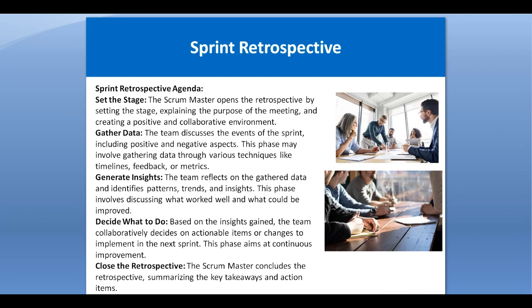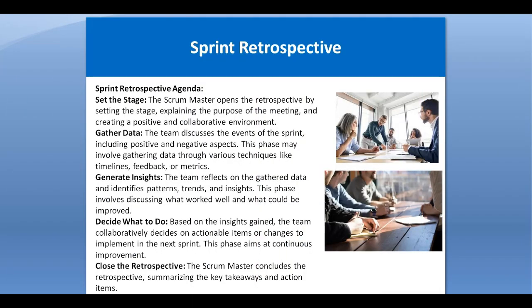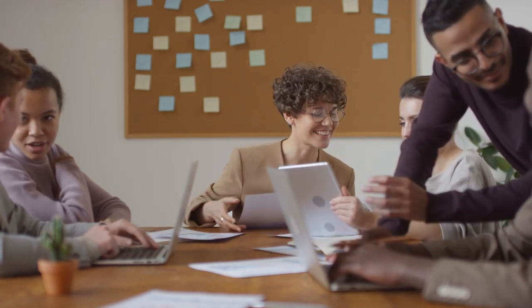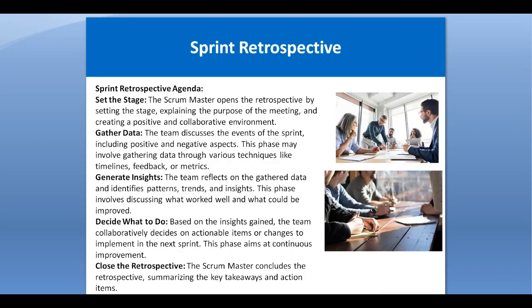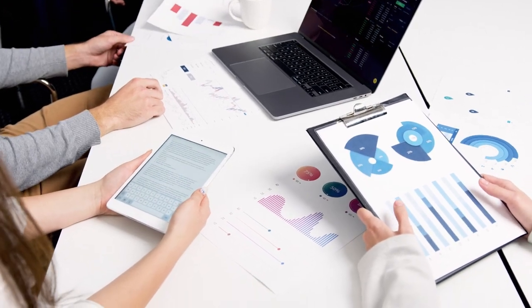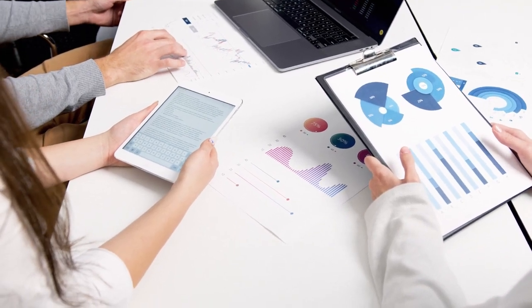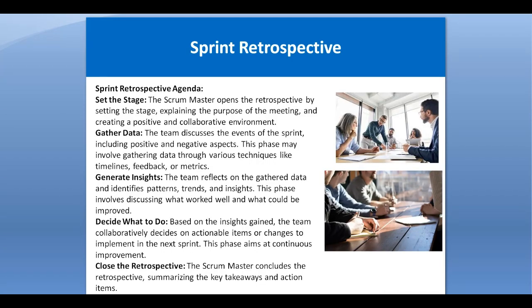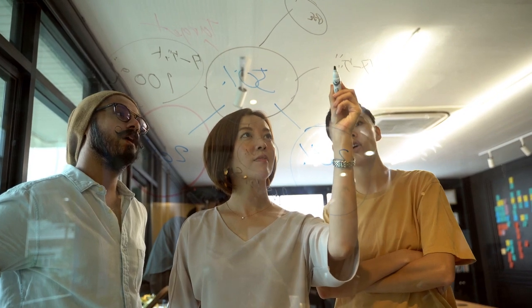The sprint retrospective agenda: first, set the stage — the scrum master opens the retrospective session by explaining the purpose of the meeting and creating a positive and collaborative environment. Remember that in these sorts of sessions it can sometimes become heated, with everyone blaming each other. The scrum master's role is to cool down the situation and ensure the session remains productive.